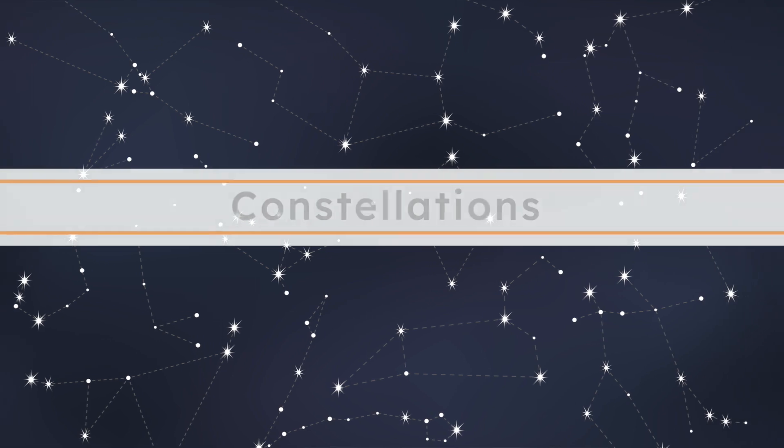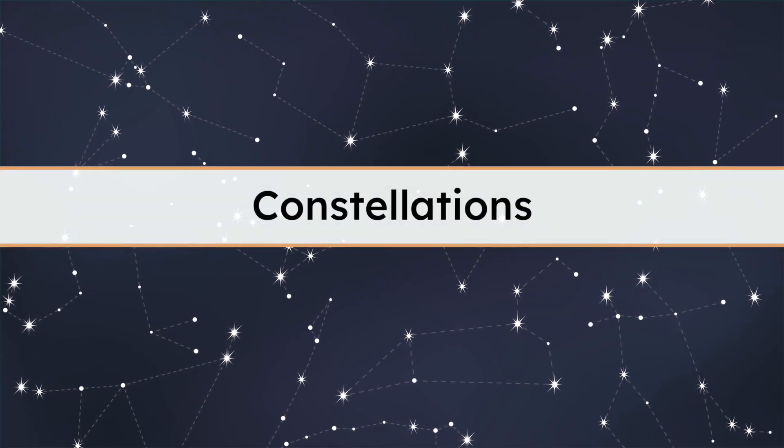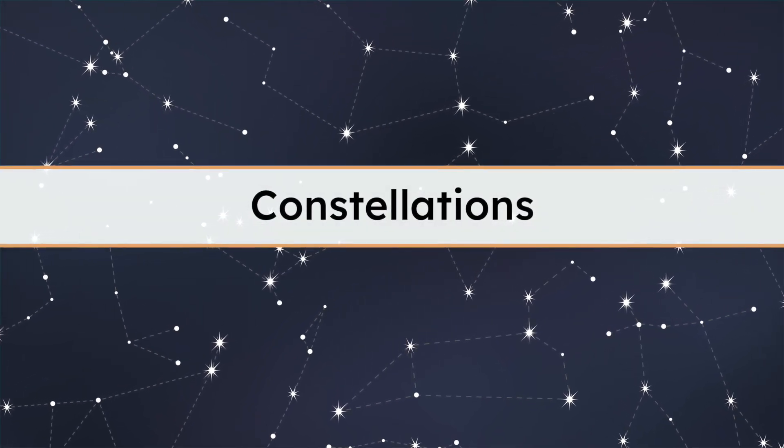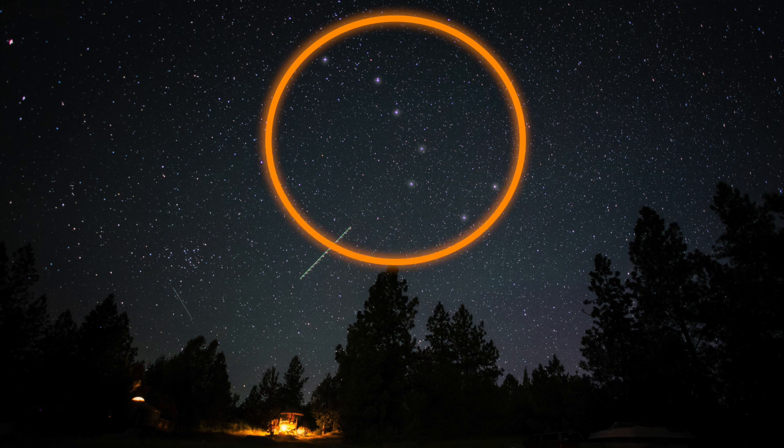Some might even have their own solar systems that are way too far away for us to see with just our eyes. From here on Earth, the stars just look like twinkling specks. But if you look closely, you might notice something special. People have been looking up at the stars for thousands of years. Over time, they noticed that stars stayed in the same groups in the night sky. People began to notice that those groups of stars made patterns and shapes in the sky.